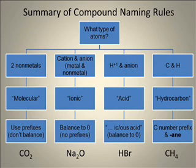Let's summarize our rules using a flow chart. In the case of CO2, there are two nonmetal atoms, so I use prefixes and name it carbon dioxide. In the case of Na2O, I recognize its metal-nonmetal combination, so I don't use prefixes — I balance ion charges: sodium is plus one and oxygen is minus two, so I need two sodiums to balance one oxygen. In the case of HBr, since it starts with H, I recognize it's an acid; with only two elements it's a binary acid, so its name is hydrobromic acid. For CH4, it's two nonmetals and I recognize it as a hydrocarbon — one carbon means methane.